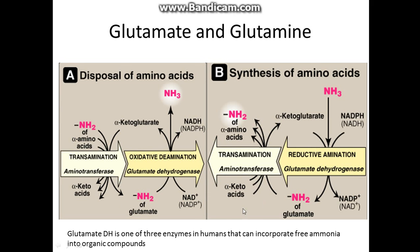Glutamate dehydrogenase is one of only three enzymes in humans that can incorporate free ammonia into an organic compound. As you can see here, NH3 comes in and is incorporated as an NH2 group in glutamate, with alpha-ketoglutarate being transaminated. It can also go the other way — the NH2 comes off an amino acid via an aminotransferase onto alpha-ketoglutarate to form glutamate, which then by glutamate dehydrogenase can release NH3.